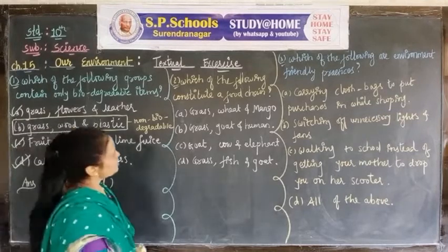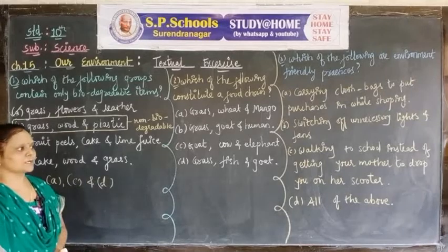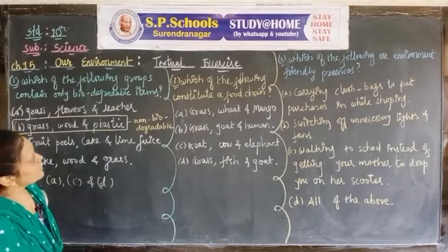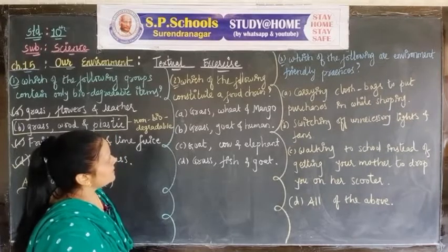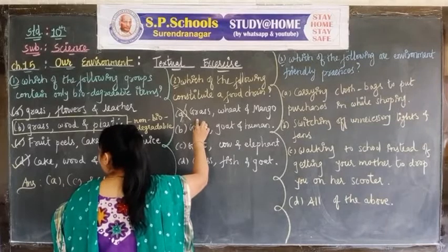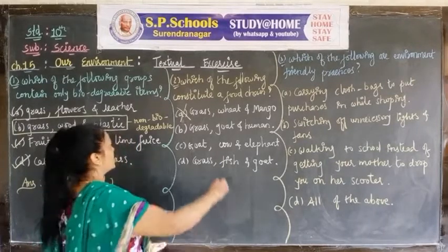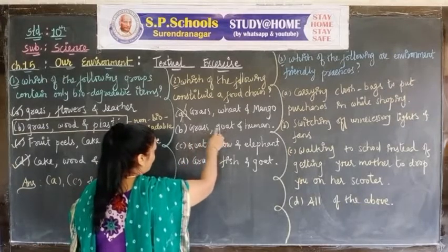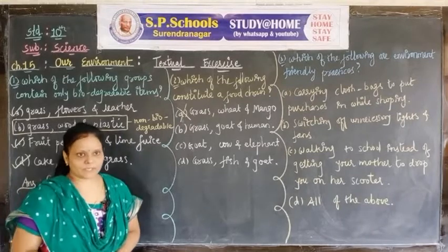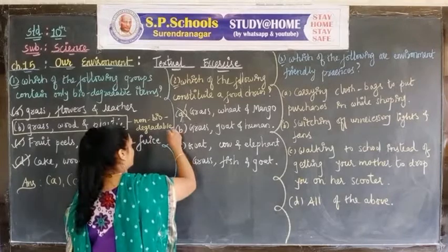Question two: Which of the following constitute a food chain? To make a food chain in any ecosystem, first a producer arises, then herbivores, then carnivores or omnivores. Grass cannot take food from wheat, and wheat cannot take nutrition from mango. Grass is the producer; goat can depend on grass, and human can depend on goat. Humans are considered omnivores, so: grass → goat → human makes a food chain.